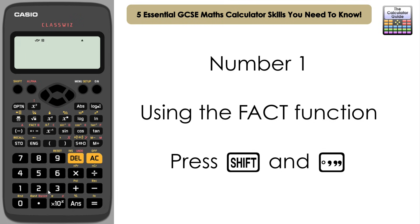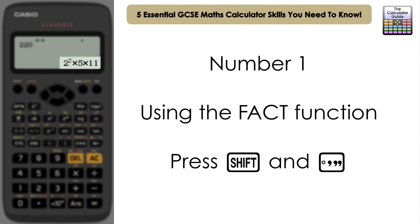The first essential GCSE maths calculator skill is how to use the FACT function, which displays a number as a product of its prime factors. Let's say we have the number 220 — input that and press equals to make it our answer. Then press Shift and this button to get FACT, and it will display it as a product of its prime factors: 2 squared times 5 times 11.